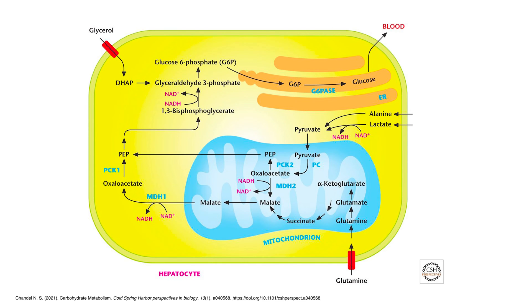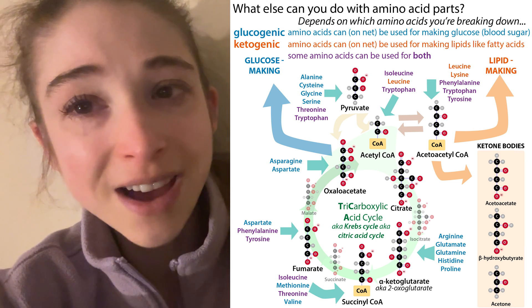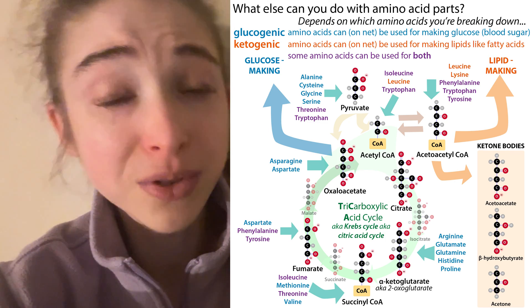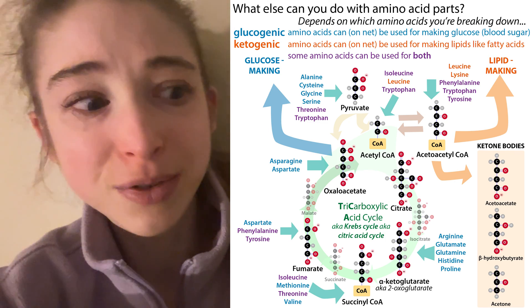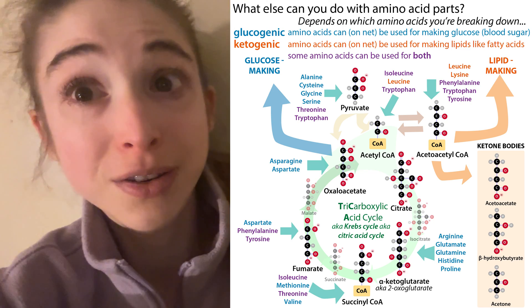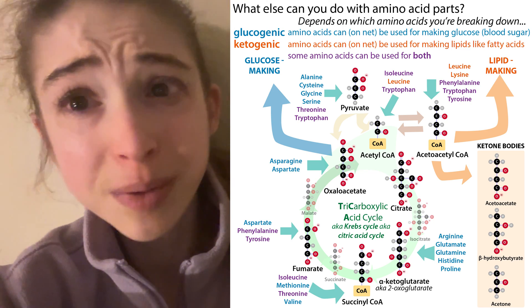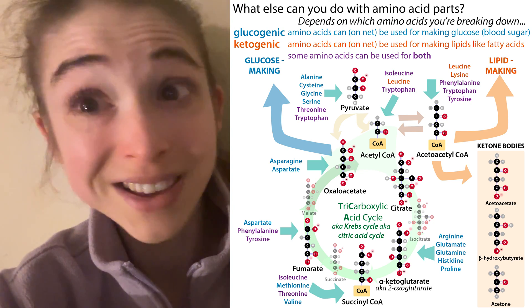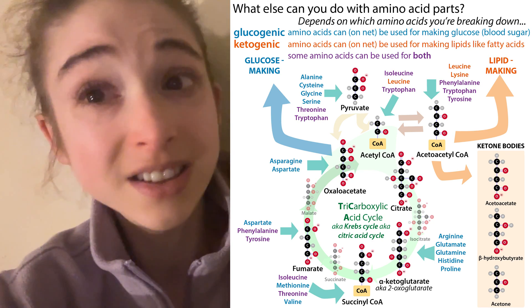So glucogenic versus ketogenic: you can still make glucose from things that are ketogenic, but in order to keep making glucose you'd have to keep putting in more than you're taking out, so you can't sustainably or on net make glucose from it. But if you were to put a tracer onto your ketone body, don't be surprised if you find it ended up in that glucose — because it can be used to make glucose, just not sustainably.